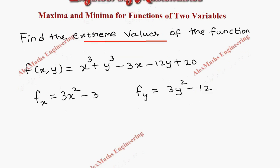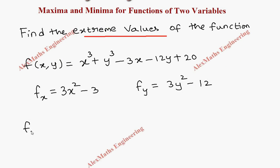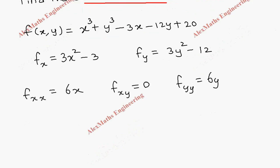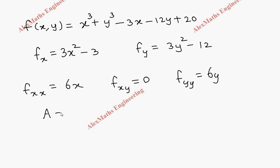Now we have to find fxx, the partial differentiation of fx with respect to x again, which gives 6x. Then fxy, the partial differentiation of f with respect to both x and y — since all terms are y terms, it is 0. Then fyy, the partial differentiation of fy with respect to y again, which is 6y.